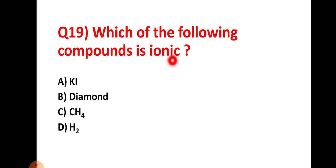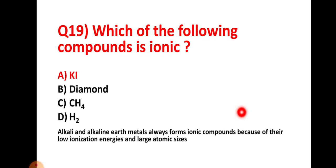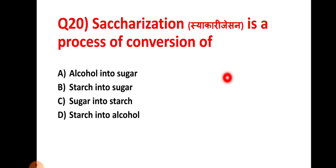Question number nineteen: which of the following is an ionic compound — option A: KI, option B: diamond, option C: CS4, option D: H2? The right answer is option A, KI (potassium iodide). Alkali metals and alkaline earth metals always form ionic compounds due to their low ionization energy and large atomic size.